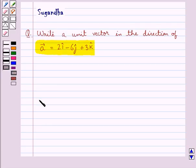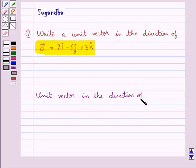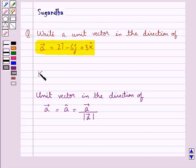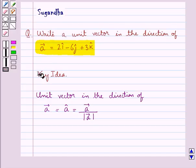We know that the unit vector in the direction of vector A is given by A cap, which is equal to vector A upon magnitude of vector A. This is the key idea to be used in this question.